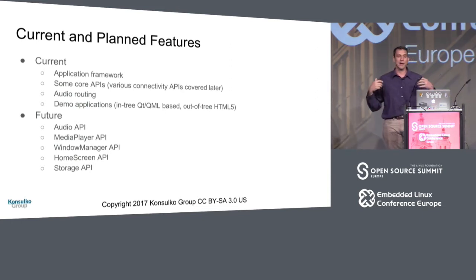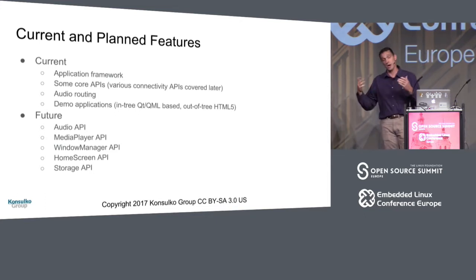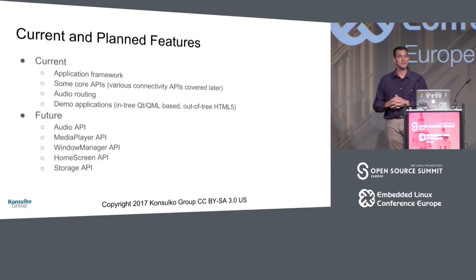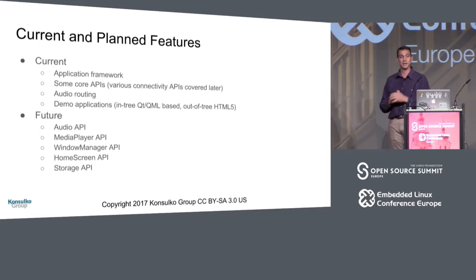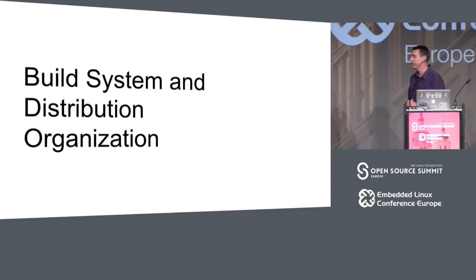Right now we've got an application framework, some core APIs, audio routing, and some demo applications. What's in tree today is some QML-based applications, but as you may have heard in Walt's talk, the intention is to be UI independent — that's really a hard requirement in this market. In the future, we're going to have an audio API, media player API, window manager, home screen, storage API — all these things that kind of map out to the types of APIs you see in popular mobile operating system ecosystems.